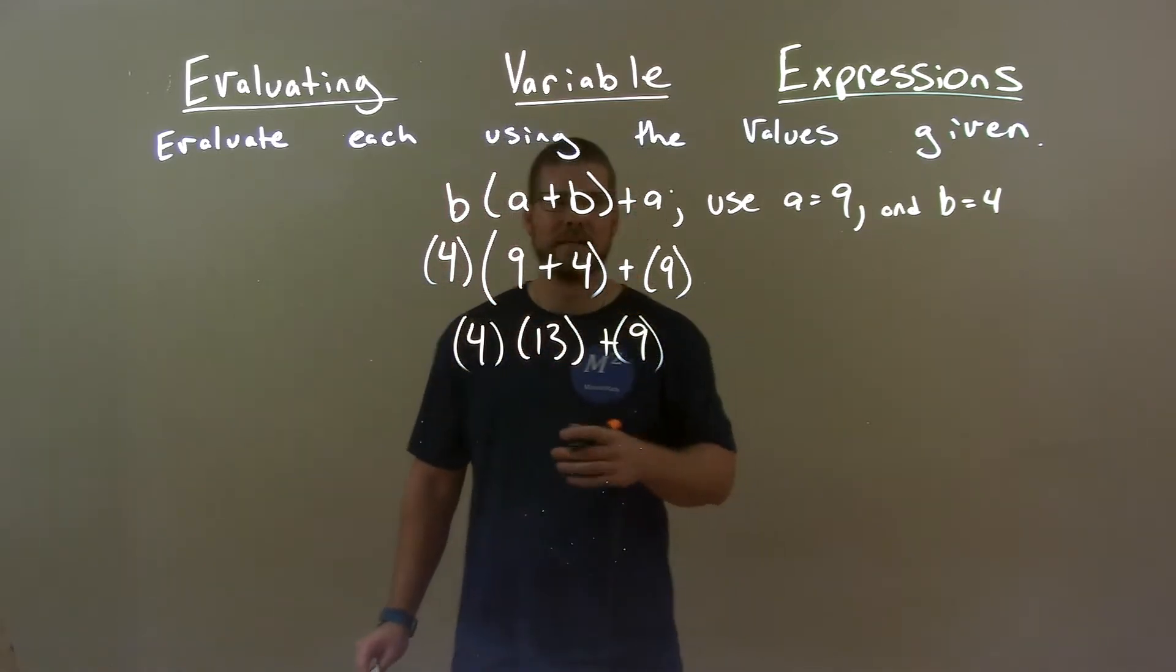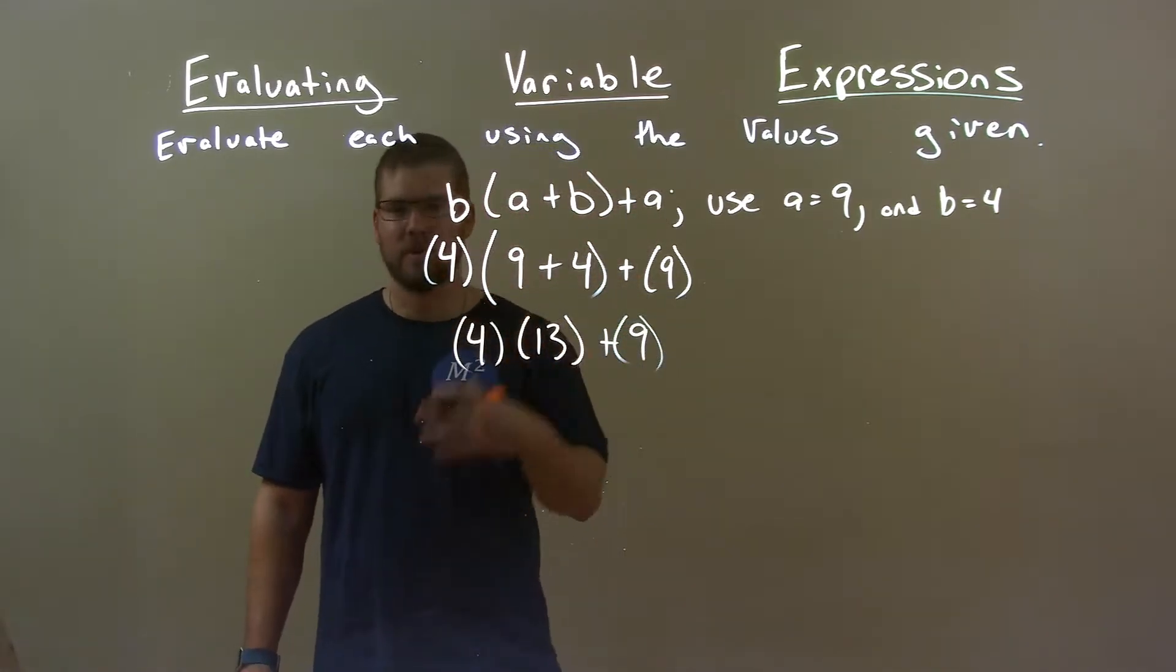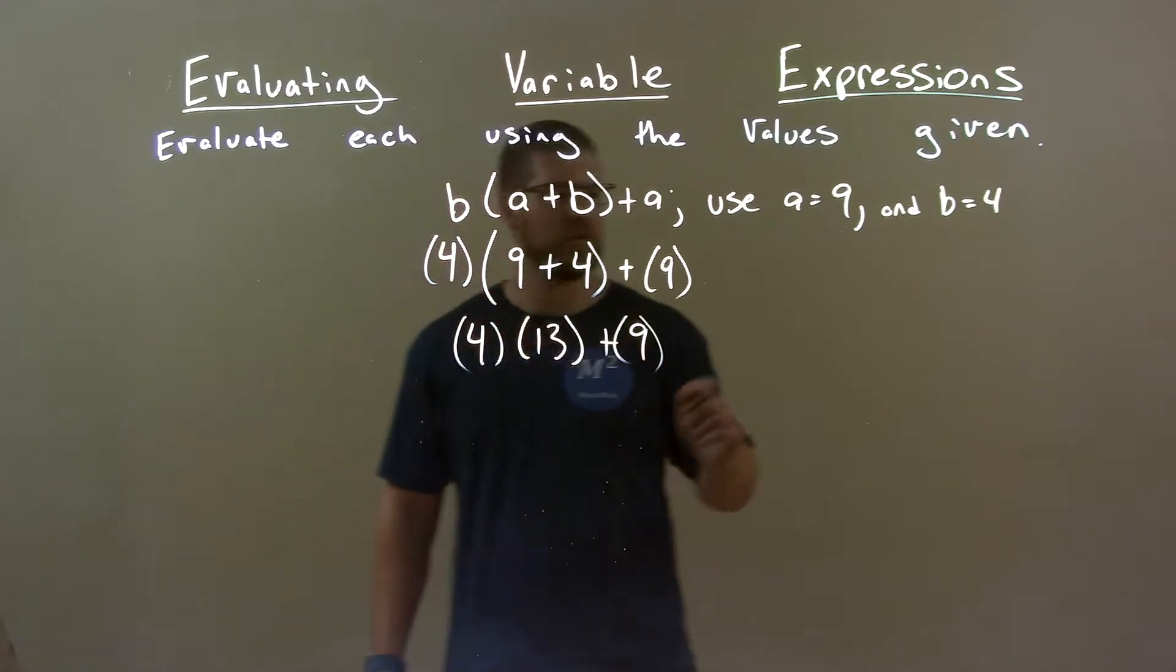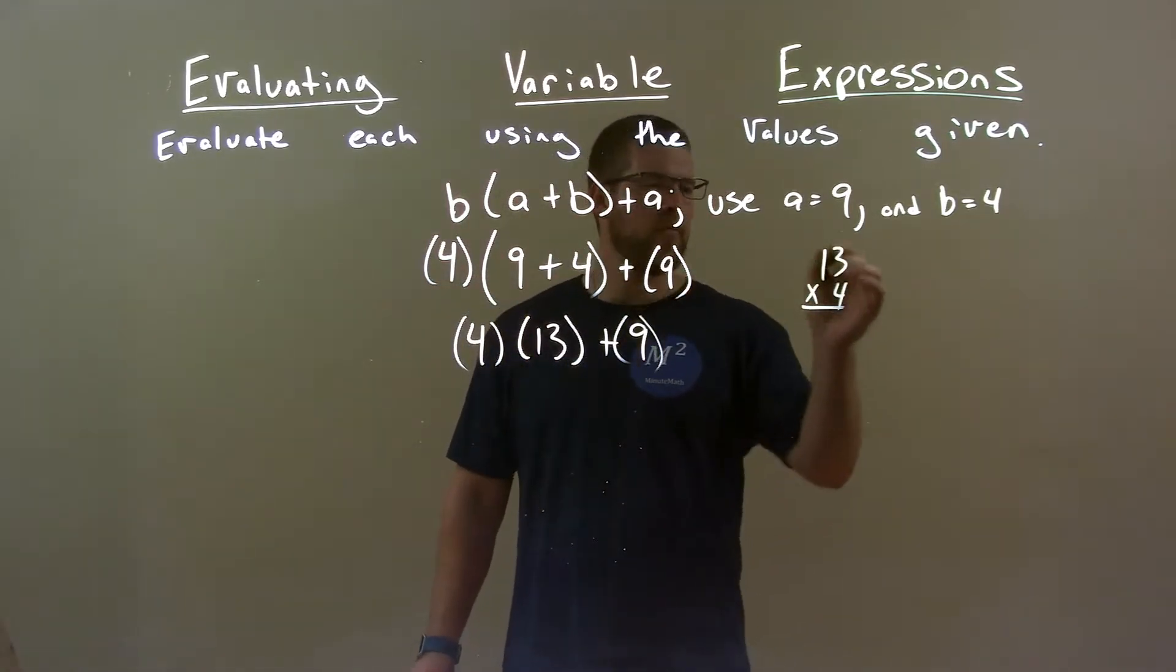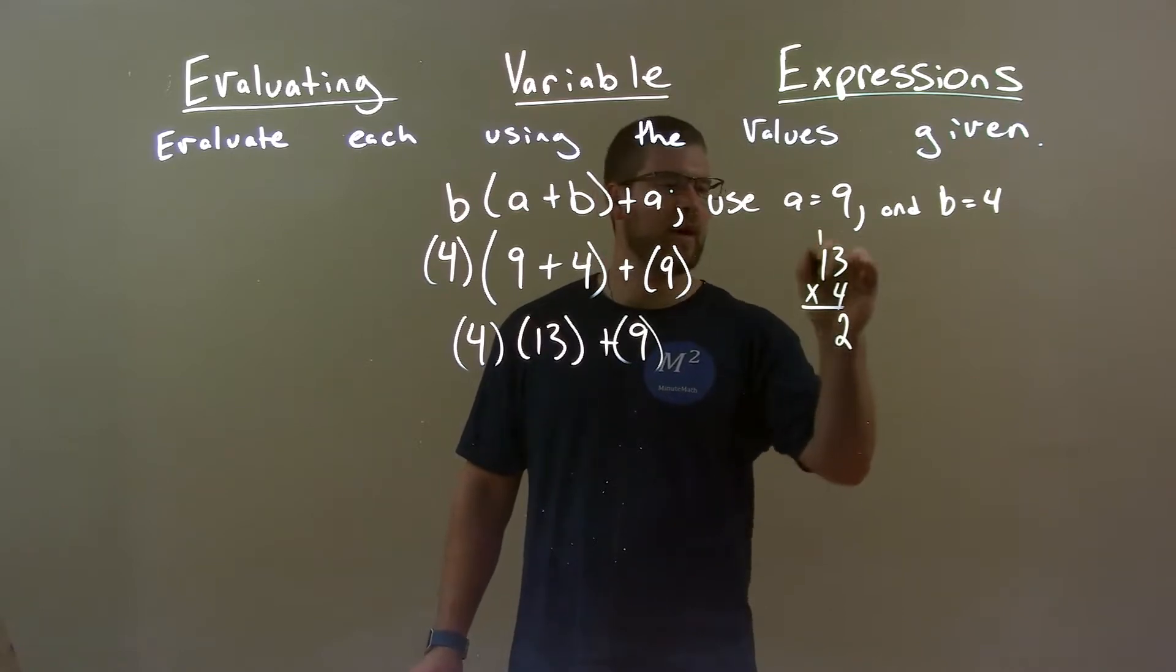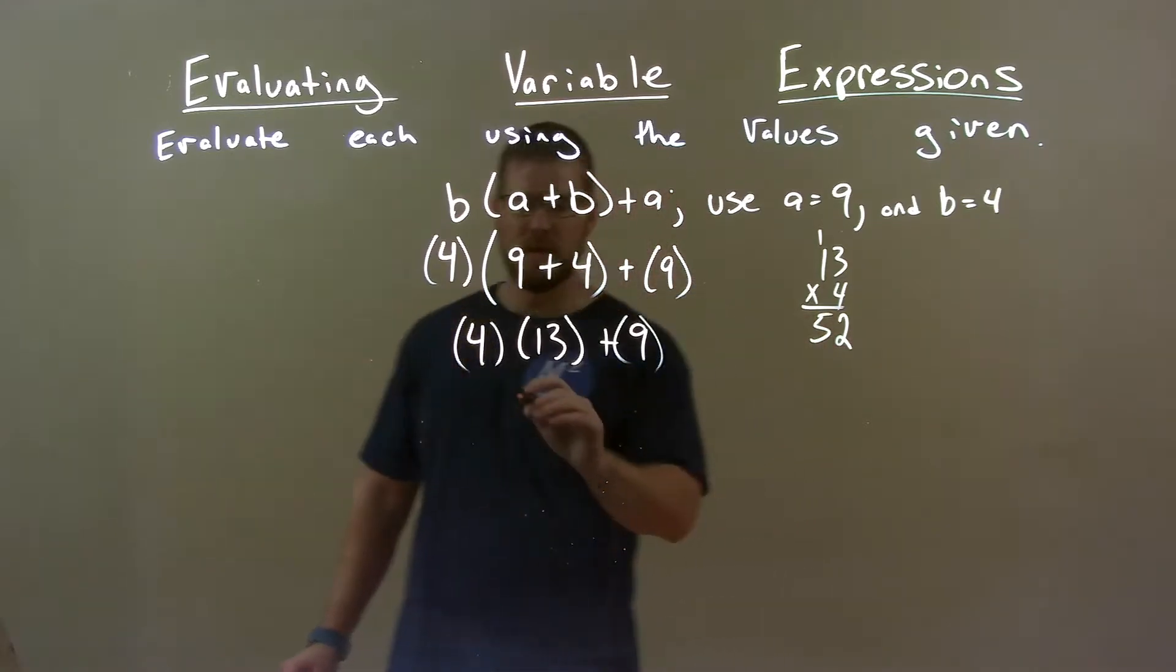Multiplication is our next step in our order of operations. 4 times 13. Well, 13 times 4, if you don't know off the top of your head: 4 times 3 is 12, carry the 1; 4 times 1 is 4 plus 1 is 5. We got 52 here.